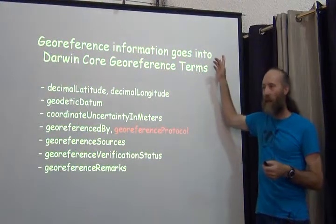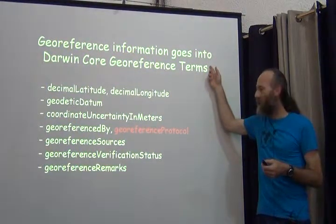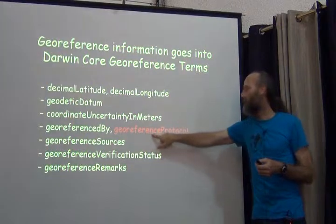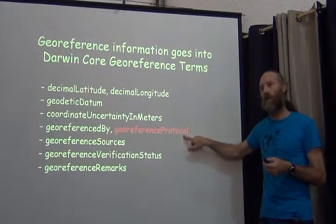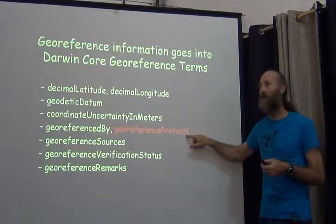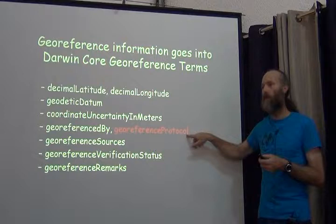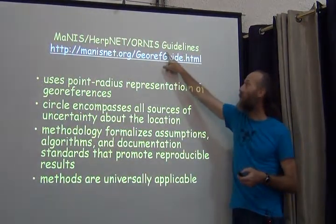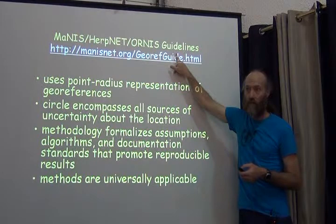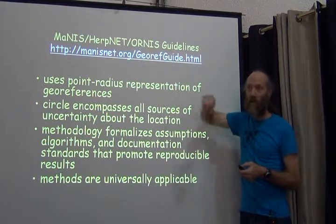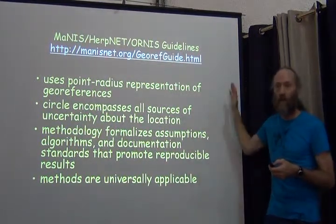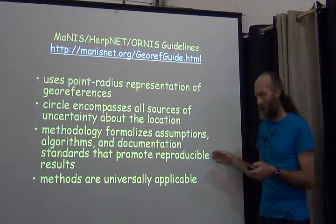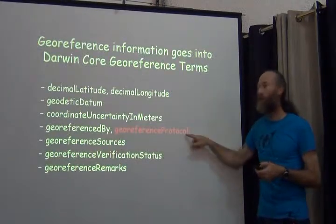That set of guidelines is what you would put into the Darwin Core term 'georeference protocol.' This is where you would write the methods that were used — specifically, you would cite the Manus-Herpnet-Ornus Guidelines or some other document such as the georeferencing quick reference guide. That would be your georeference protocol.